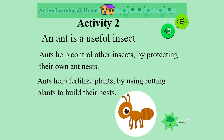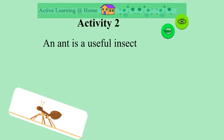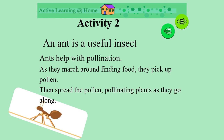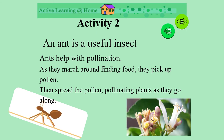Ants also help to fertilize plants by using the rotting plants to build their nests underground. Ants are also useful because they help with pollination. As they march around finding food, they pick up pollen, then spread the pollen, pollinating the plants as they go along. They don't even know that they're doing this. Ants are very useful.